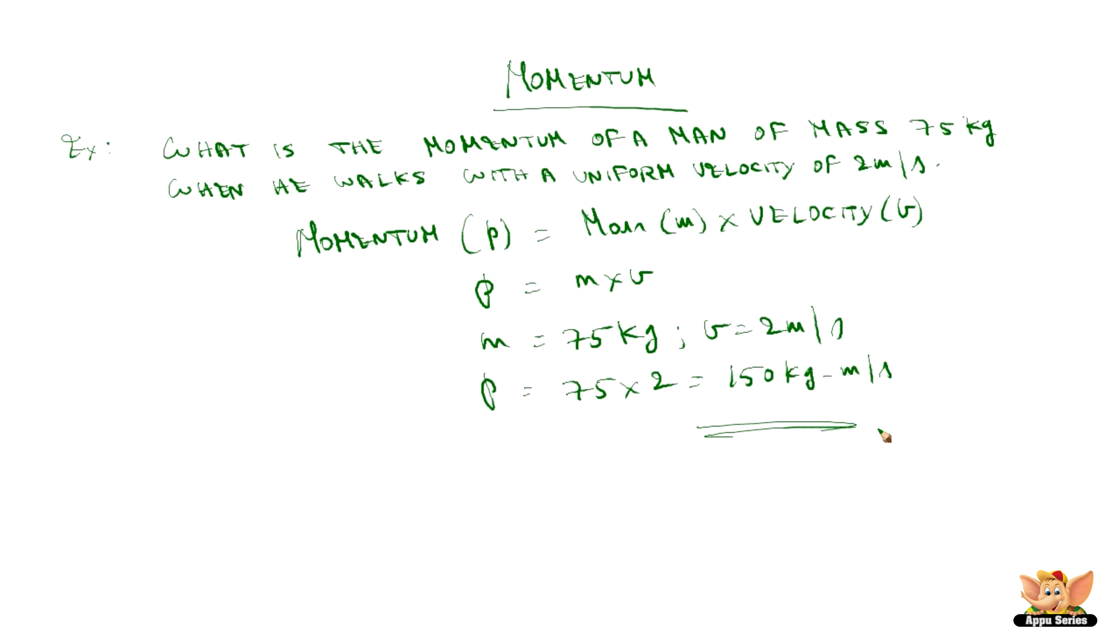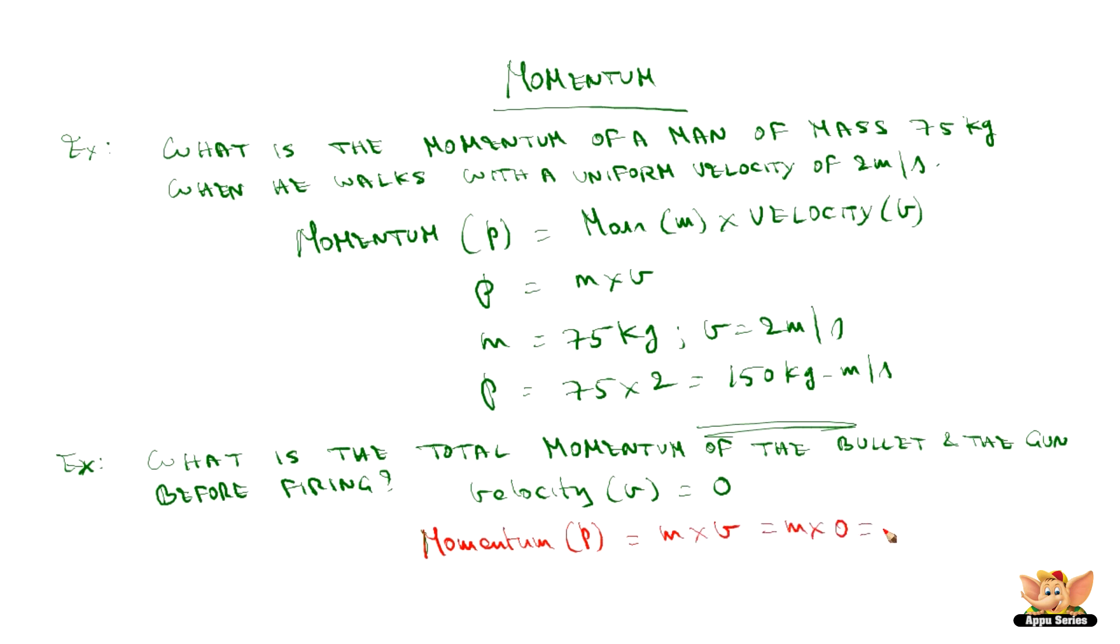See another example. What is the total momentum of the bullet and the gun before firing? The gun and the bullet are at rest. Therefore, the velocity is 0. Momentum P is equal to mass m into V velocity and whatever the mass is when velocity is 0, momentum is 0. So, P is equal to 0.